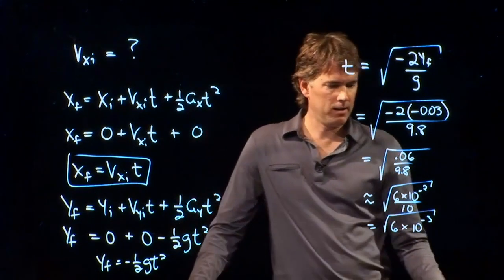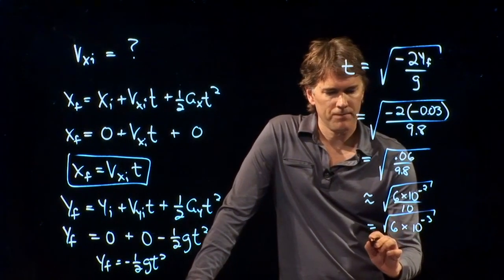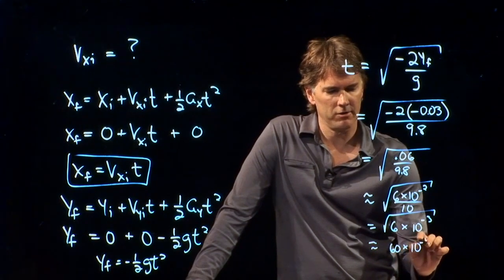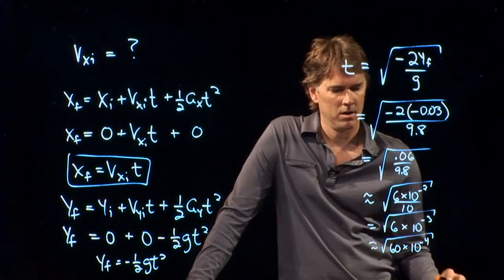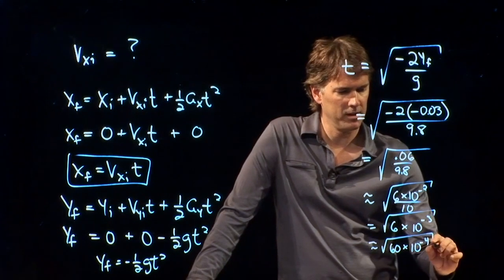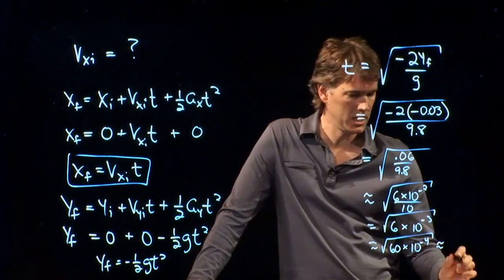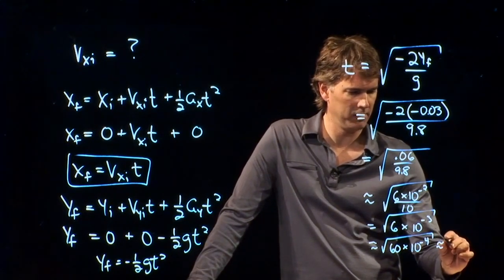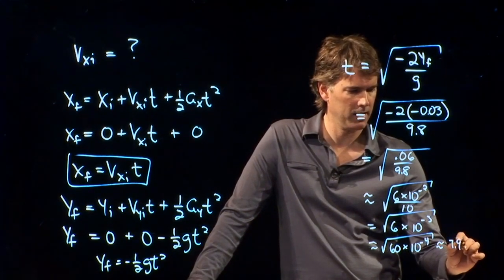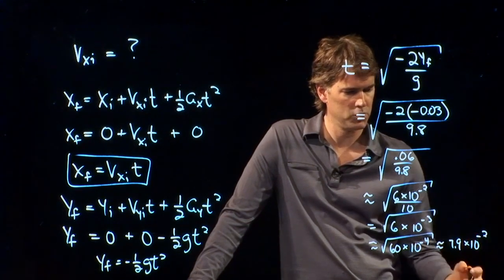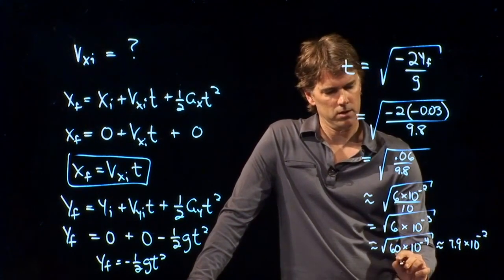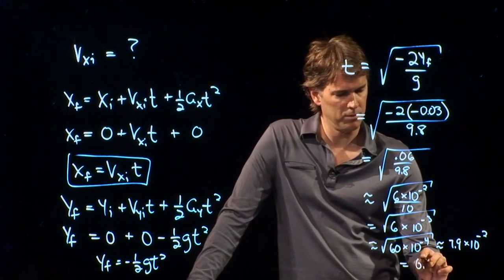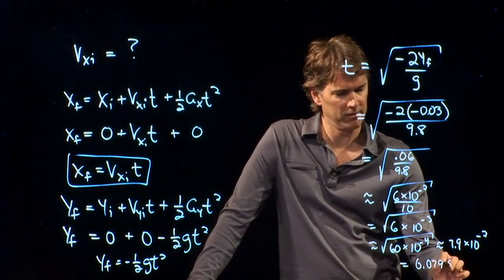But I don't know how to do that. So we'll change it to 60×10⁻⁴. And the square root of 60 is about 8. It's a little bit less than 8. We'll say it's 7.9. And then we have a 10⁻². And so we're going to say that this is 0.079 seconds.